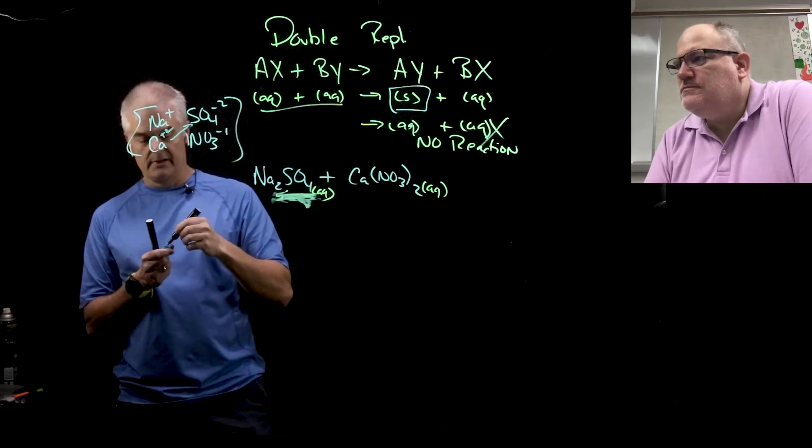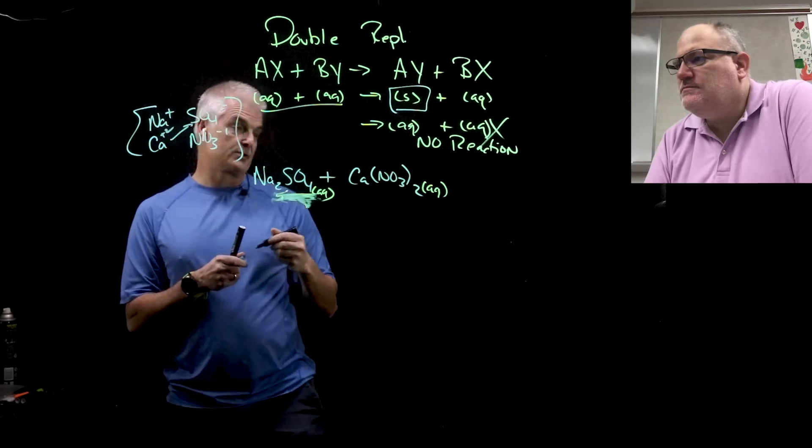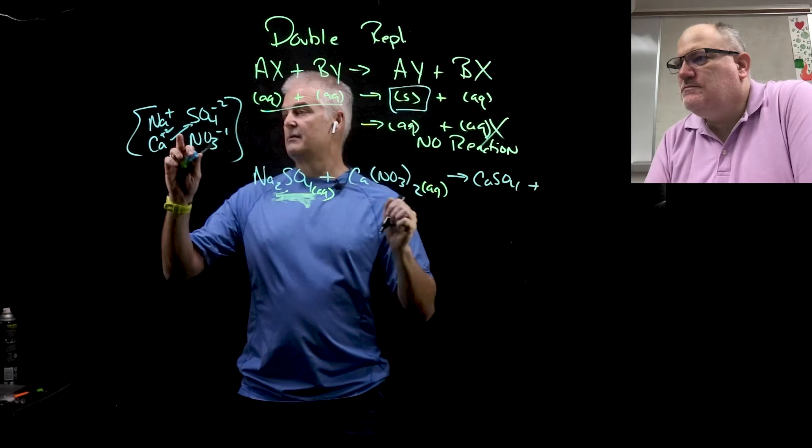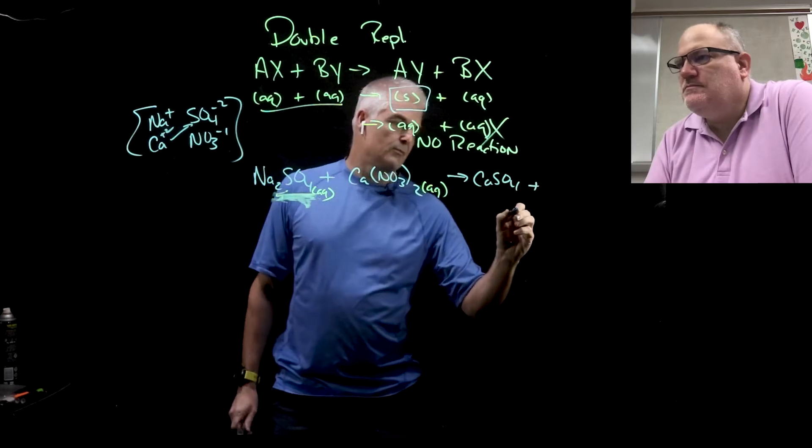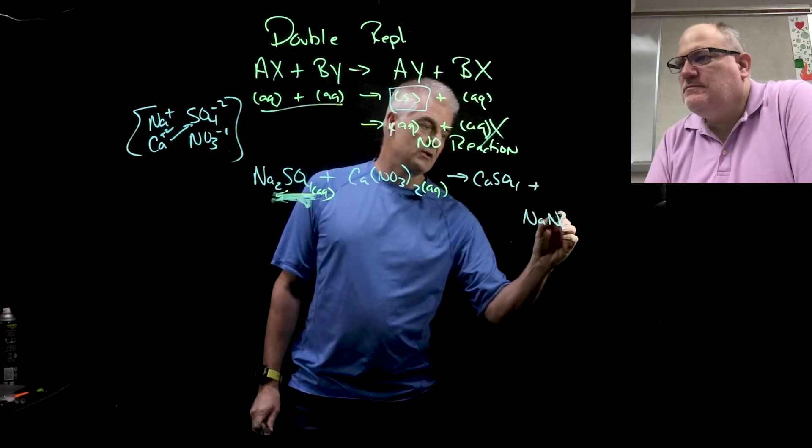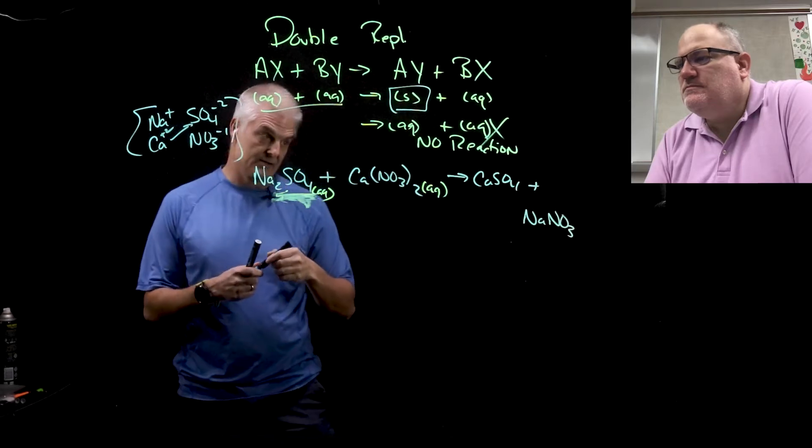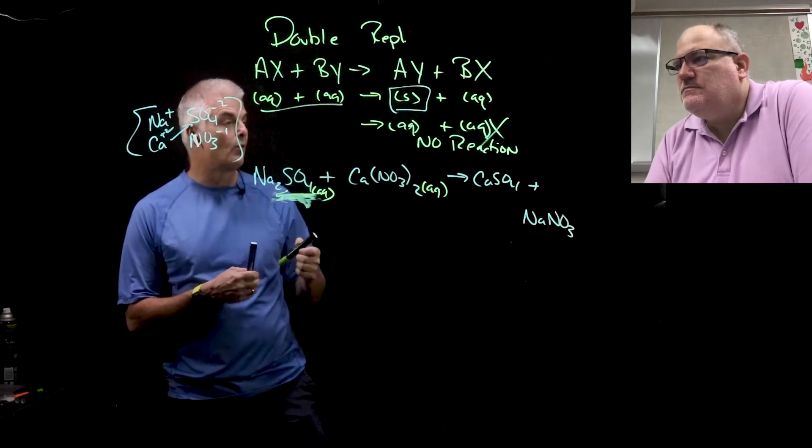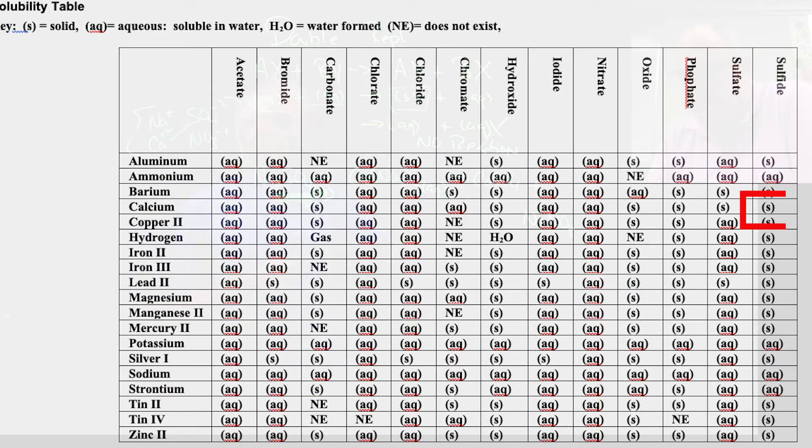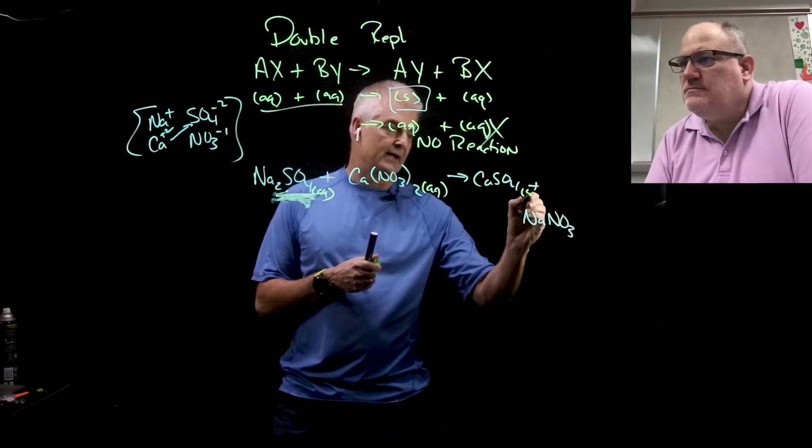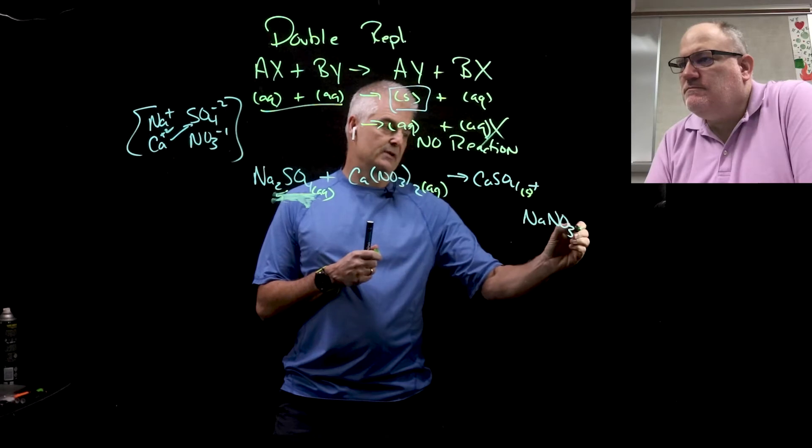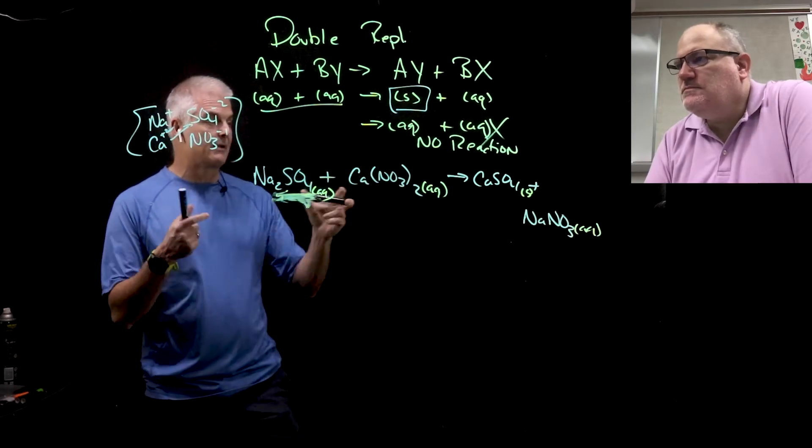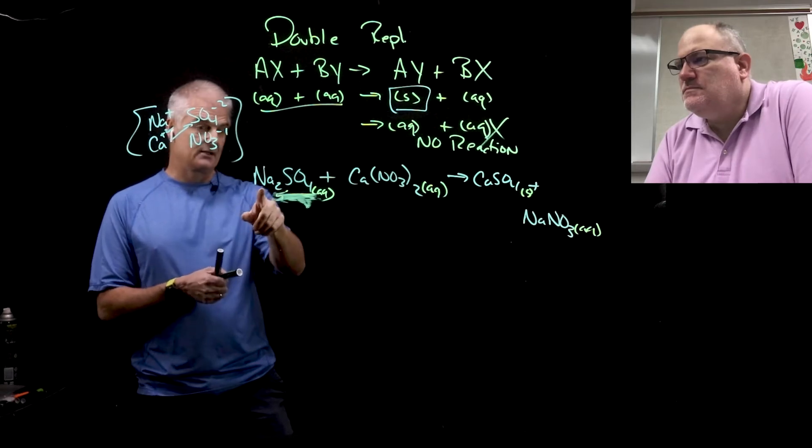Now we're going to put the calcium with the sulfate. Calcium sulfate is CaSO4, and then sodium with nitrate, NaNO3. Before I try and balance this, I think it's important that I check to see our table and see if one of these is a solid. If you look at calcium sulfate, you'll discover that's a solid and sodium nitrate is an aq, so this reaction actually happens.